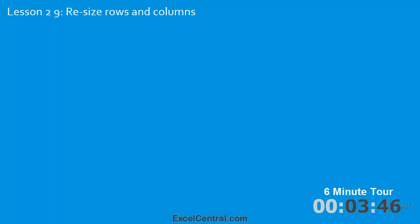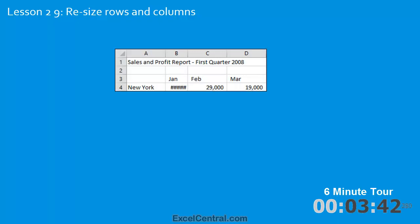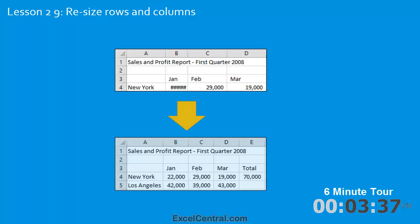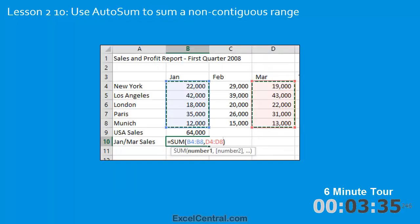In the ninth lesson you'll resize some rows and columns. You'll use a worksheet that has badly sized columns and then automatically size the columns so that they look correct. In the tenth lesson you'll use AutoSum to sum a non-contiguous range.